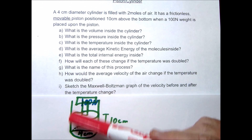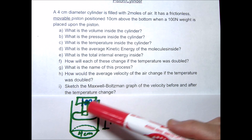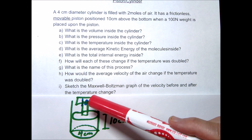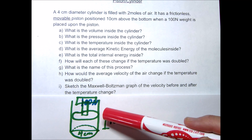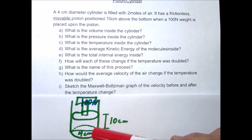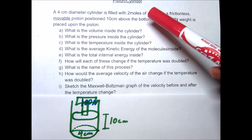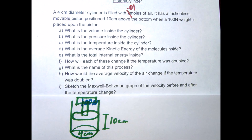In this one we're going to have a piston and a cylinder. On top of the piston we're going to place a 100 newton weight, which is going to push it down. When it pushes it down, the total height between the bottom of the cylinder and the bottom of the piston is going to be 10 centimeters. The diameter of the cylinder is 4 centimeters, and we're going to place 0.01 moles of gas inside.